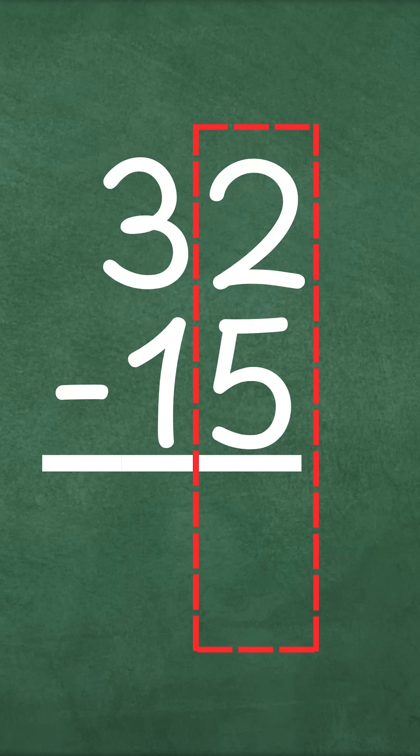As always when subtracting, we start with the ones place. Can we subtract 2 minus 5? We can't because 2 is a smaller number than 5. That's how we know it's time to regroup.